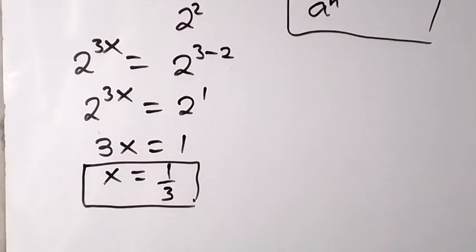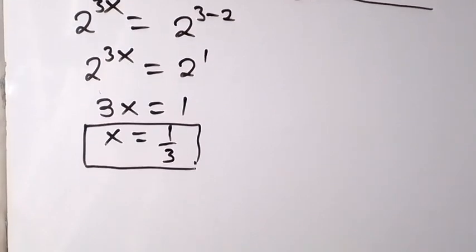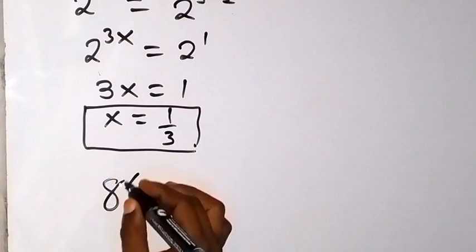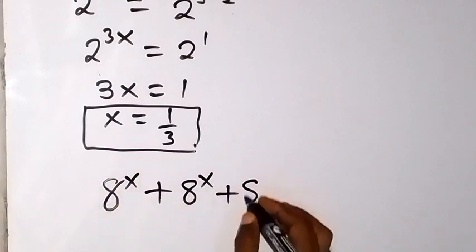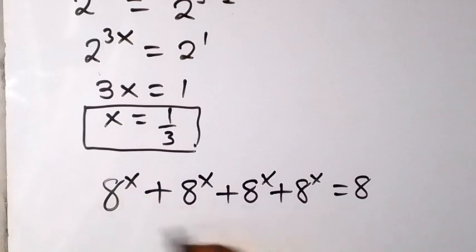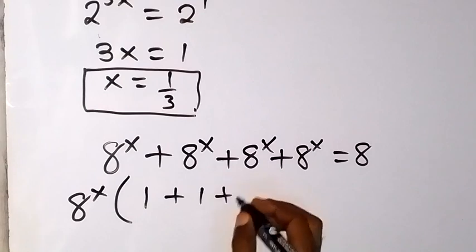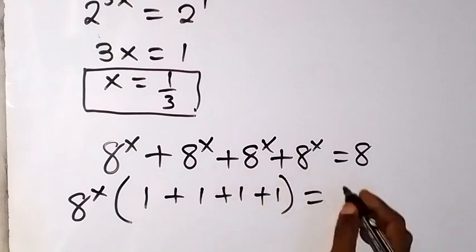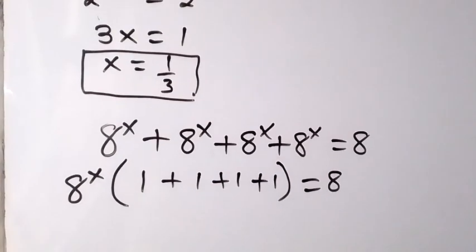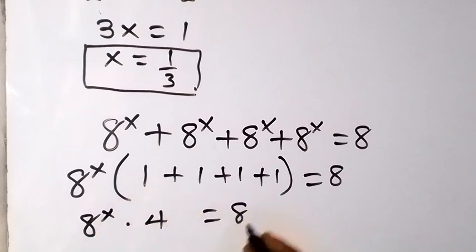We can also solve this a second way. We have a^x + a^x + a^x + a^x equals 8, where a = 8. Here, a^x is common. We take it out and have a^x times (1 + 1 + 1 + 1) equals 8. Of course, 1 + 1 + 1 + 1 is 4. So we have a^x times 4 equals 8. Dividing both sides by 4, we get a^x.